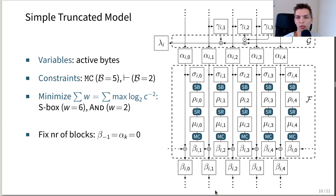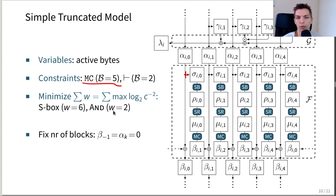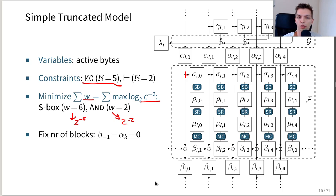For the simple truncated model, we have a variable for each active byte in the state, and add constraints for all linear operations in the cipher. For MixColumns, we model it using its branch number 5, which corresponds to the MDS property of the AES MixColumns. We model the linear branch using its branch number of 2. As it is an MILP model, we require an optimization goal, so we minimize the overall weight — the logarithm of the inverse squared correlation contribution. For the S-box, we have a weight of 6, corresponding to the best squared correlation contribution of 2^{-6}. For the AND gate, this corresponds to the best squared correlation contribution of 2^{-2}. We fix the number of blocks used in the approximation: before the first keystream extraction, all masks are set to 0, and after the last keystream extraction, all masks are also set to 0.